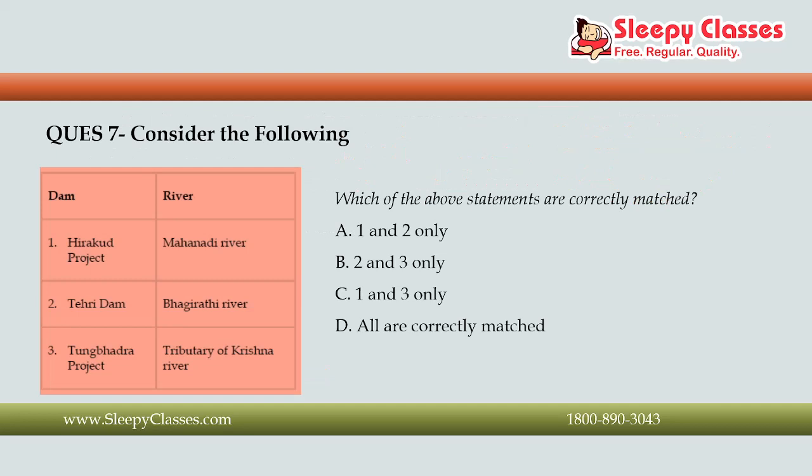The next question asks you to match the following: Hirakud project with the Mahanadi river; Tehri Dam with the Bhagirathi river; and Tungabhadra project with a tributary of the Krishna river. Which of the above are correctly matched? Options are: 1 and 2 only, 2 and 3 only, 1 and 3 only, or all are correctly matched. The correct answer is Option D — all are correctly matched.